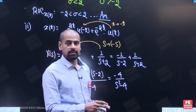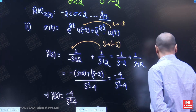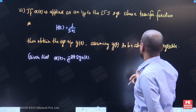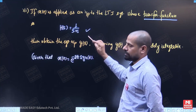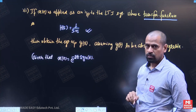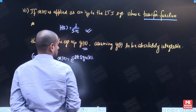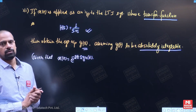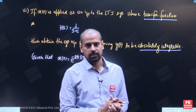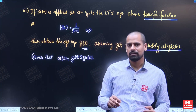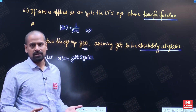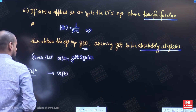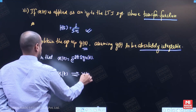Now let us see the third part of the question. This question has three parts. In the third part, the given signal x(t) is applied to an LTI system whose transfer function H(s) is 1 upon (s plus 1). We have to obtain the system output y(t), and the nature of y(t) should be absolutely integrable. So first we write down the Laplace transform Y(s) and then obtain the inverse such that y(t) is absolutely integrable.